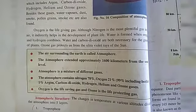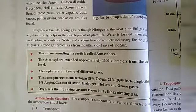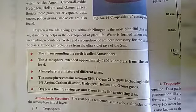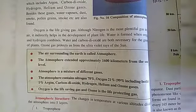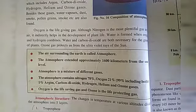The atmosphere extends about 1,600 km from sea level. The atmosphere is a mixture of different gases. Nitrogen is 78% and oxygen is 21%, making up 99% together, and the remaining 1% consists of carbon dioxide, hydrogen, helium, and ozone gases.